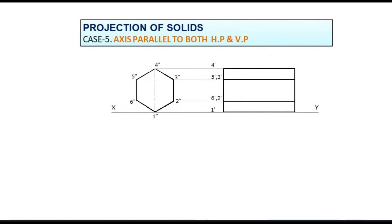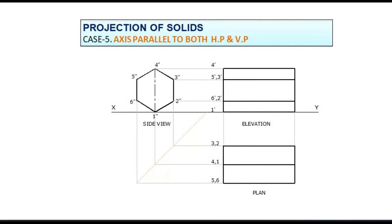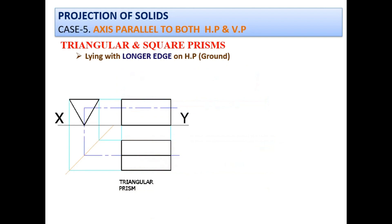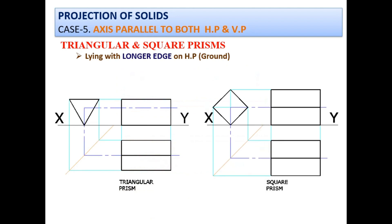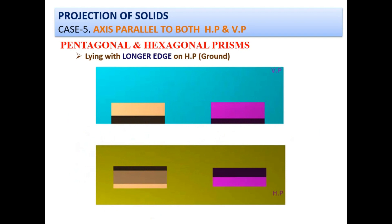To draw the plan, draw a mitre line — a 45 degree line used to transfer the width of the object from the side view to the plan. Draw vertical projectors from the side view to the mitre line, then draw projectors horizontally from the mitre line. For maintaining the length of the plan same as the elevation, draw projectors from the elevation also. Darken the required visible edges. By this, all the views of the hexagonal prism lying on the ground with its long ridge and axis parallel to VP are completed.